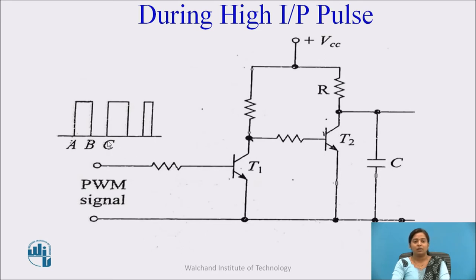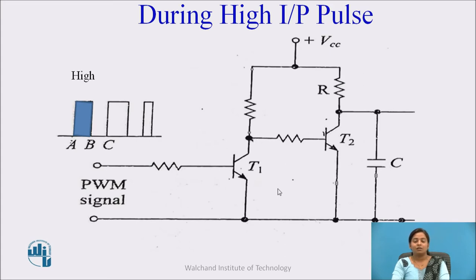Since the information in the PWM signal is in the form of change in width, we will see the working of this circuit during the time interval A to B. During this time interval A to B, the input to transistor T1 is a high signal. This transistor basically works as an inverter. So when a high input pulse is given to transistor T1, its output is a low pulse for that same duration, and this low pulse signal is given to the base of transistor T2.